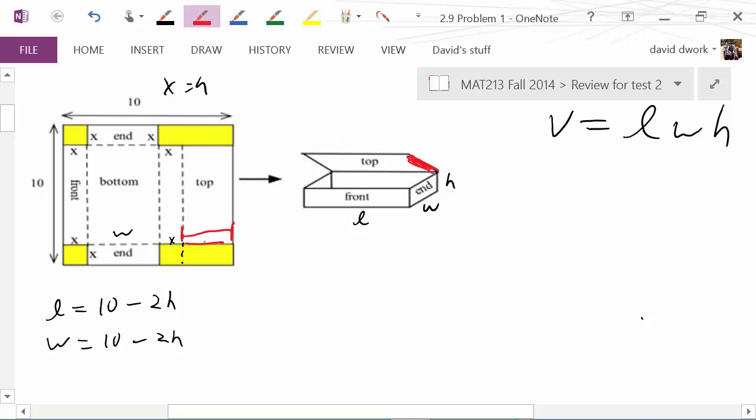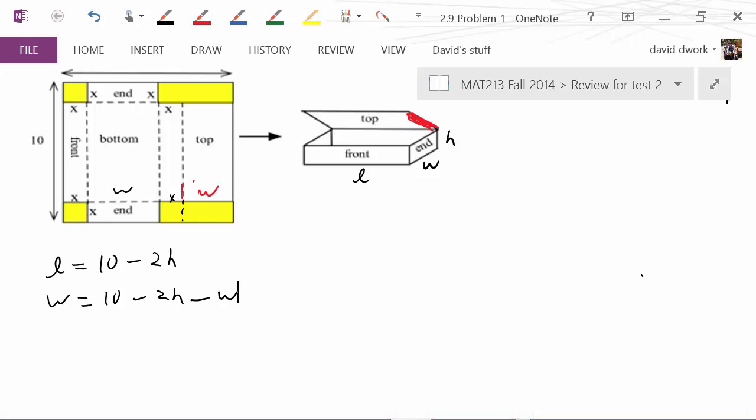If you imagine folding the box over, that's the top. This part here is the side of the top and it has to line up. This side right there is this side right there, so when it folds over it's got to be the same length as the width. So the whole side would be the 10 inches to the side minus two h's and then minus another width.